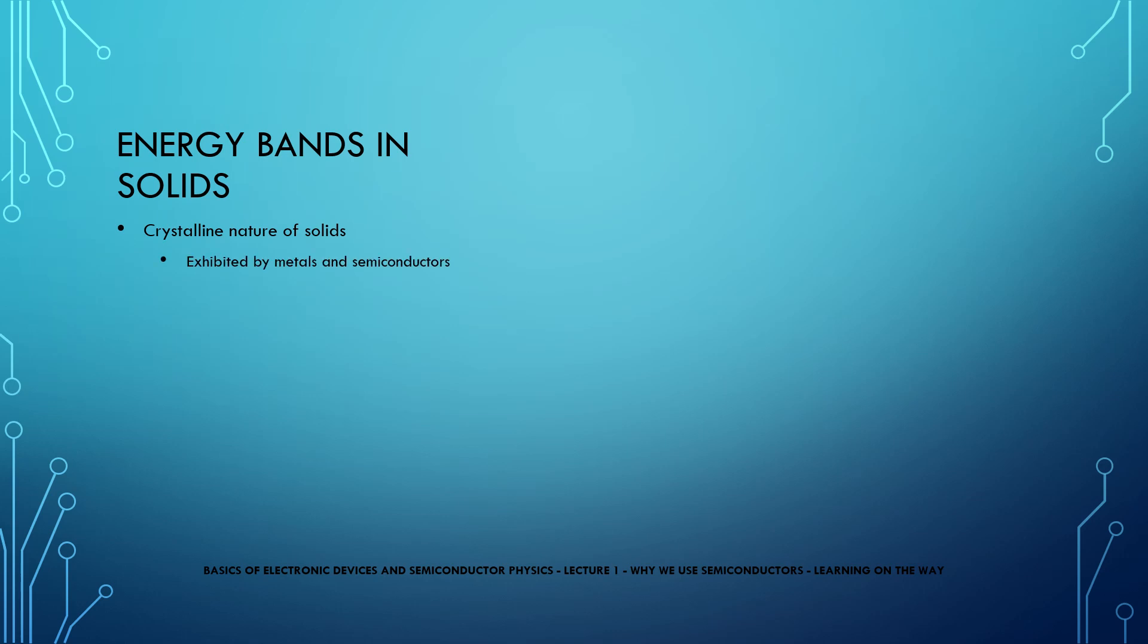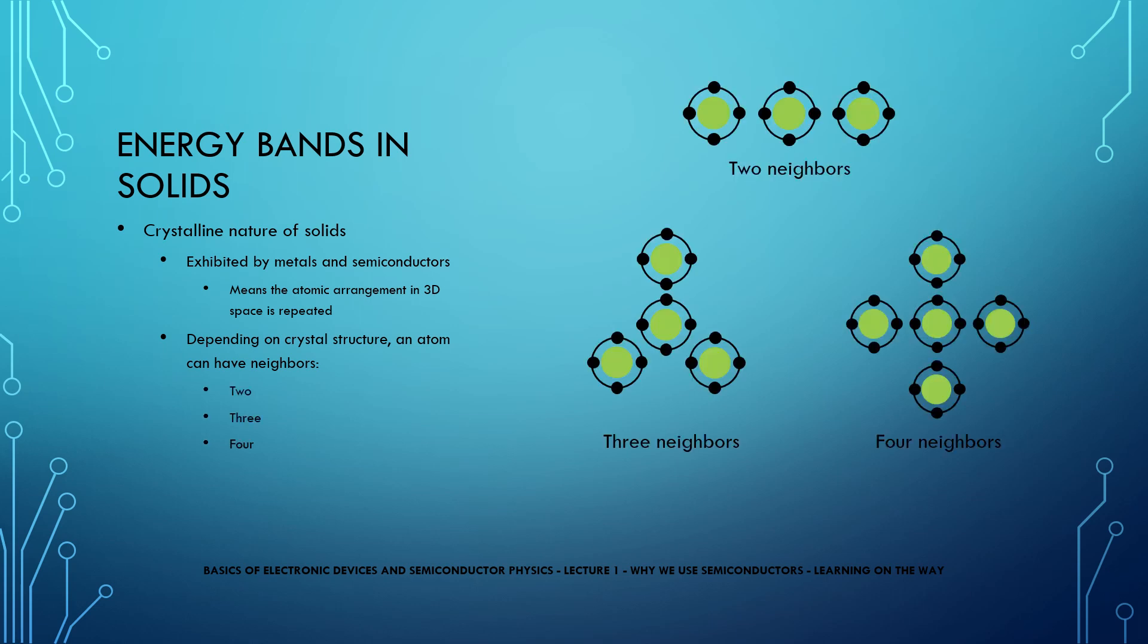Metals and semiconductors usually exhibit crystalline nature, which means that the atomic arrangement in 3D space is repeated volumetrically. Hence depending upon the crystal structure, a single atom can be surrounded by 2, 3, 4 or more atoms and the influence on electrons increases.